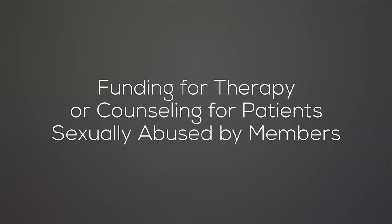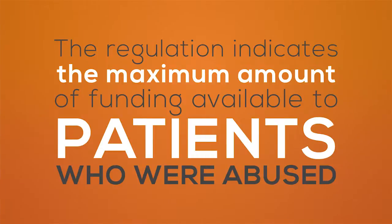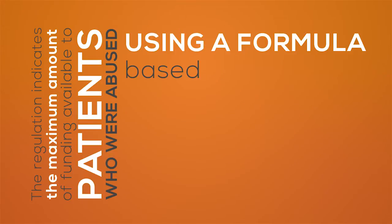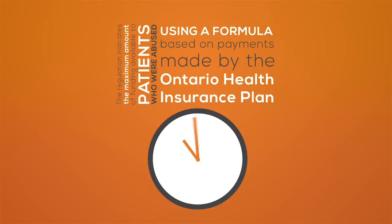Funding for therapy or counselling for patients sexually abused by members, also known as O-Reg 5994, provides additional detail for administering colleges' programs to fund therapy or counselling for patients who were sexually abused by members of health professions. The regulation indicates the maximum amount of funding available to patients who were abused, using a formula based on payments made by the Ontario Health Insurance Plan, and it defines the period of time when the funding may be provided. It's important for regulatory colleges to be aware of these provisions as they define the amount of money colleges must provide for therapy and when it is provided.